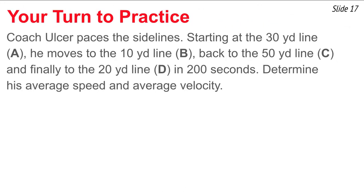Now it's your turn. Coach also paces the sideline: starts at the 30-yard line, moves to the 10, back to the 50, and finally to the 20-yard line, doing it all in 200 seconds. Calculate the average speed and average velocity. Pause this video, start with a diagram, and take some time to solve for these two quantities. If you need to review, go back and look at the earlier example. When you're ready, press play and see how you did.